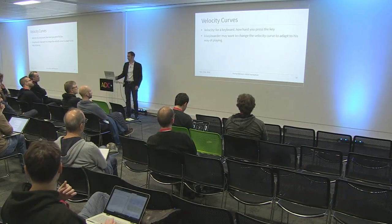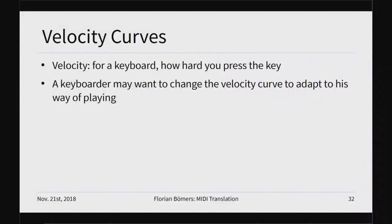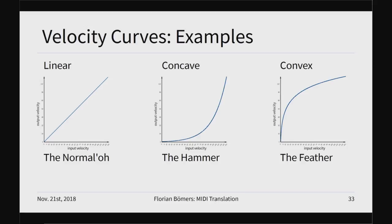Velocity curves: different keyboard players have different ways of playing. For example, my daughter has a very light way of playing so she always needs to turn up the volume, but you can fix that by adjusting the velocity curve. A 'hammer' kind of player always plays very loud and strong, so you can apply a concave curve to the velocity to only get dynamics in the high pressure ranges. A feather-touch player like my daughter could use a convex translation curve.